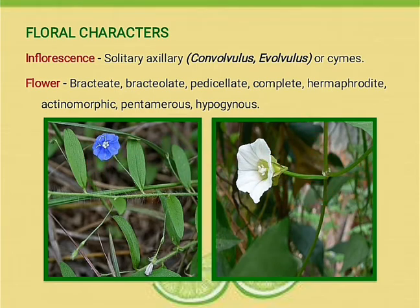What is a bract? A bract is the modified or specialized leaf, specially associated with reproductive structures such as flower, inflorescence, or cone axis, etc.